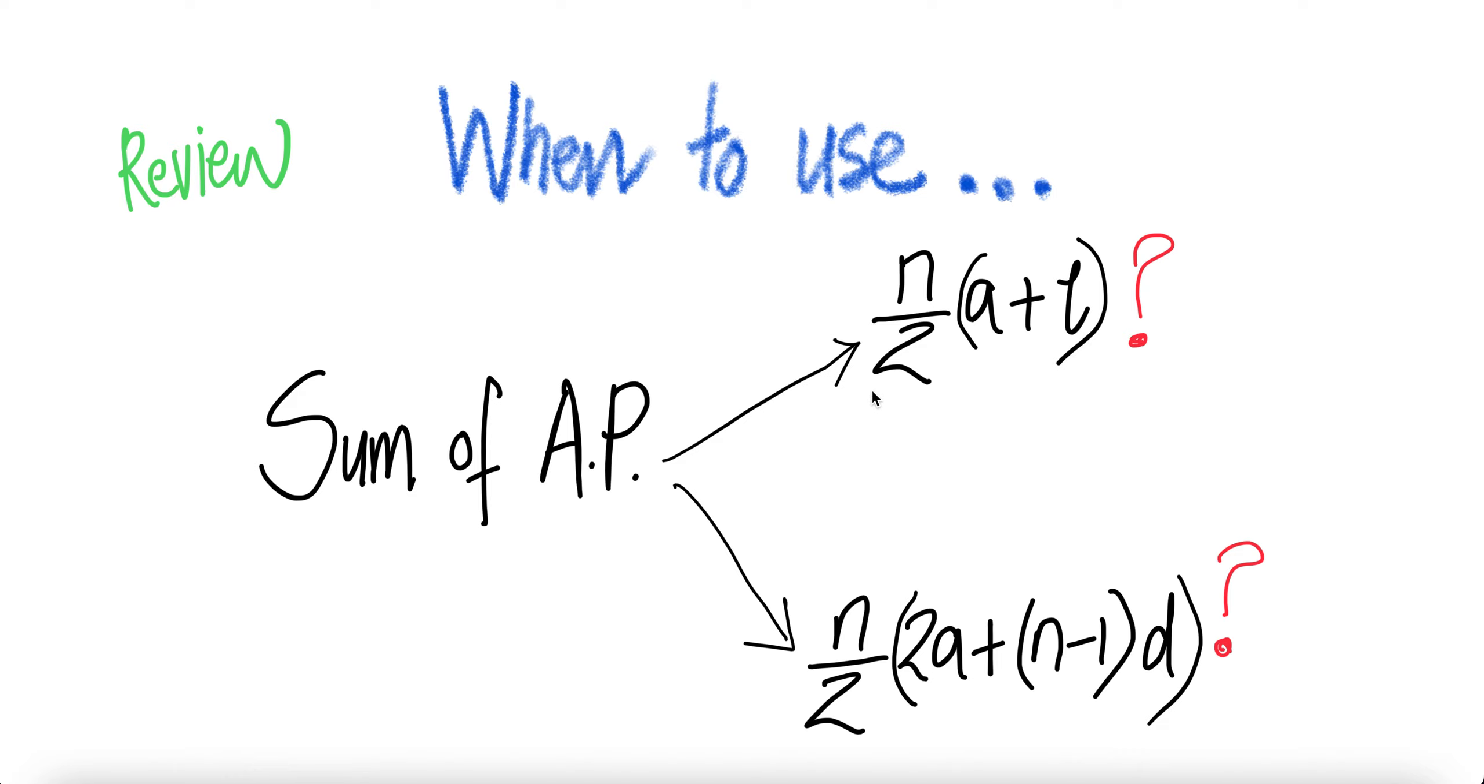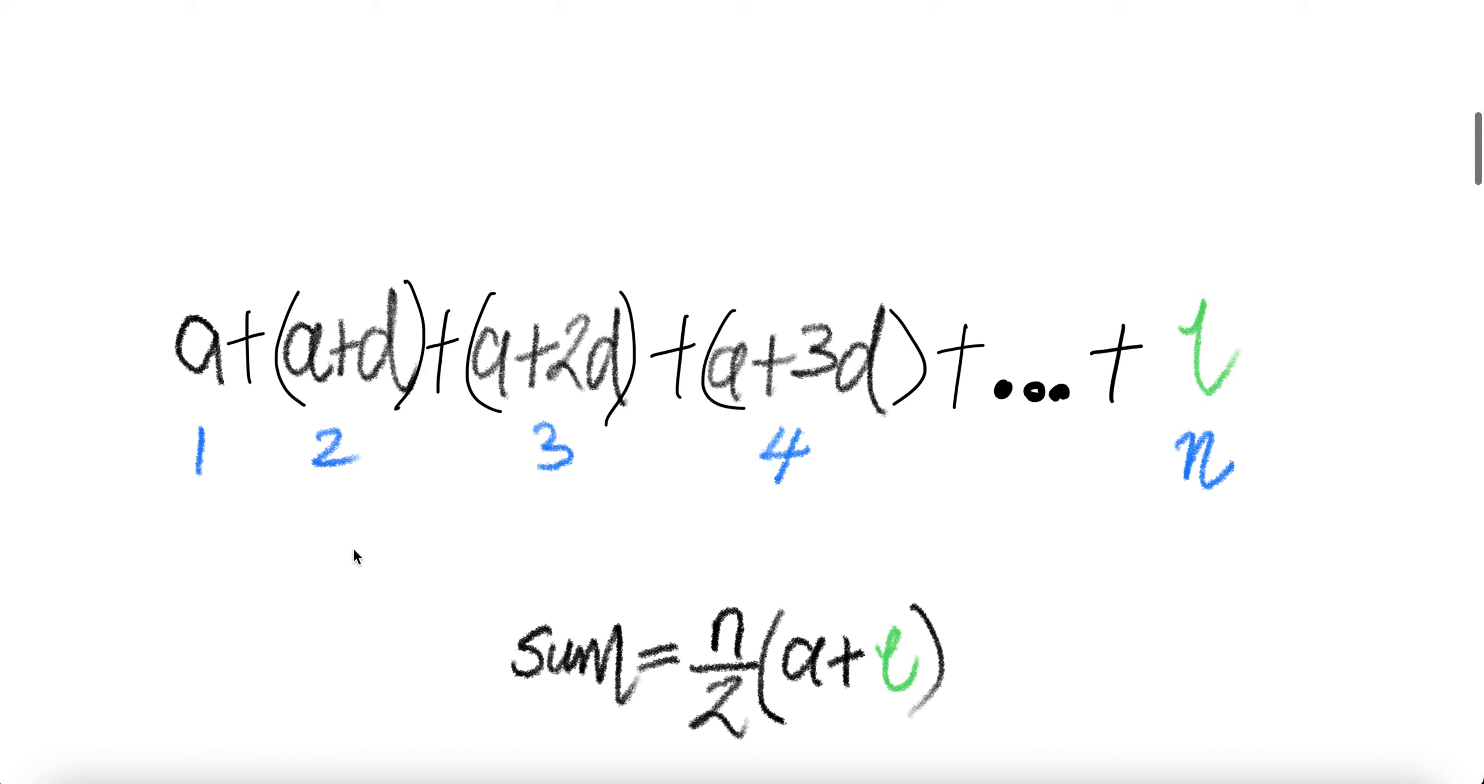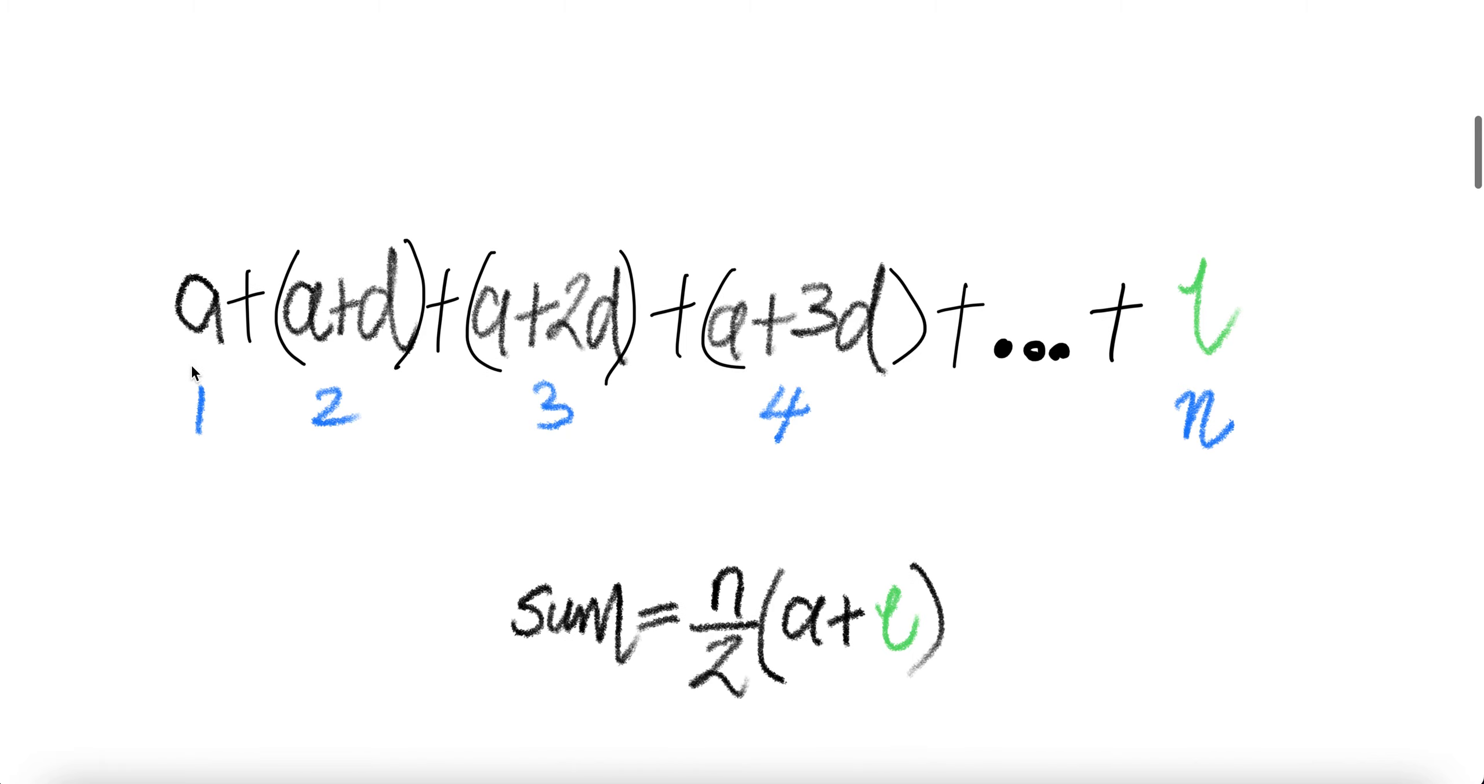So when are we supposed to use this versus that? Say we are given A and you're asked to sum the arithmetic progression with common difference D. The second term is A plus D. The third term is A plus 2D. And then the fourth term is A plus 3D, and then dot dot dot to the value of the nth term is L and you're given the value of L.